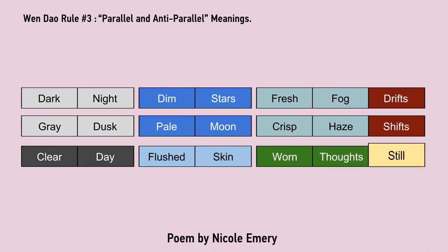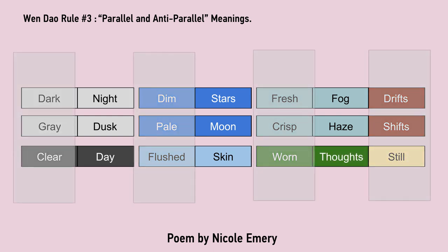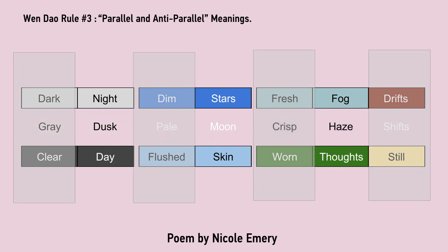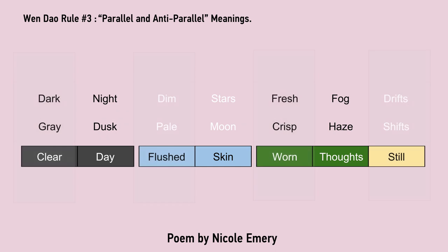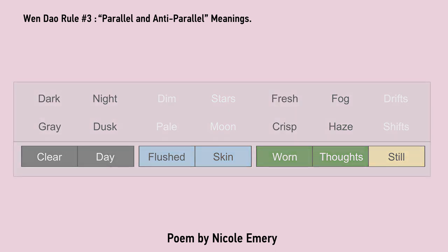When viewed vertically, we see columns of matching nouns with nouns, adjectives with adjectives and verbs to verbs. The first two lines reveal a similarity. The third line reveals a difference.